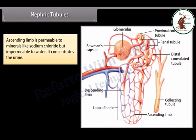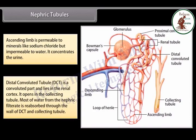The loop of Henle concentrates the urine. The distal convoluted tubule (DCT) is a convoluted part lying in the renal cortex that opens into the collecting tubule. Most of the water from the nephric filtrate is reabsorbed through the wall of the DCT and the collecting tubule.